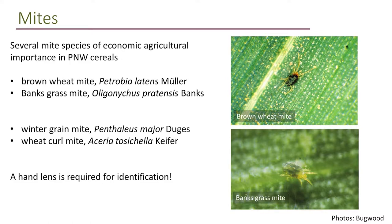Mites: several mite species of economic importance occur in Pacific Northwest cereals. There are four covered in the Advances book: the brown wheat mite, the banks grass mite, the winter grain mite, and the wheat curl mite. The banks grass mite is the green one — not as common in wheat as in other grasses. Both the brown wheat and banks grass mites are tiny, so you need a hand lens to see and recognize them.